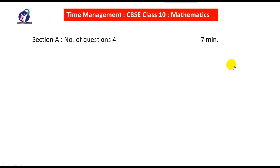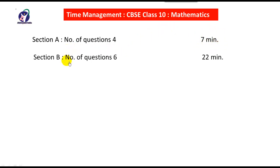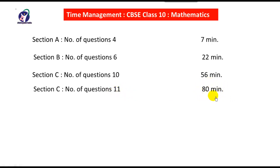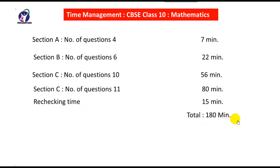Section A has 4 questions and you should take at least 7 minutes for it. Section B has 6 questions — you can consume around 22 minutes. Section C has 10 questions and you can consume 56 minutes. Section D has 11 questions and you can consume 80 minutes. The remaining 15 minutes you can use for rechecking. In total that is 180 minutes.